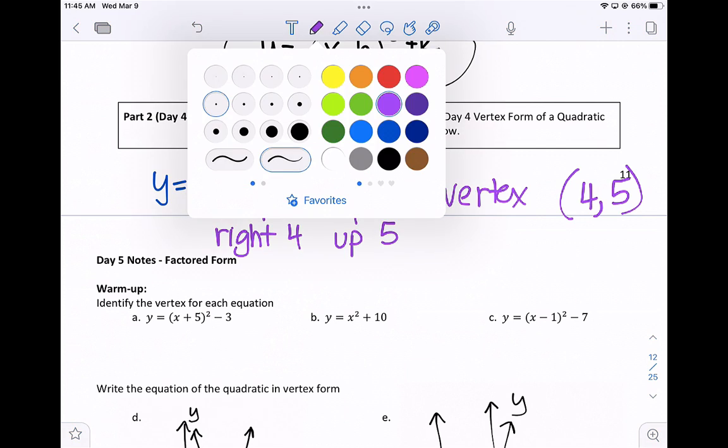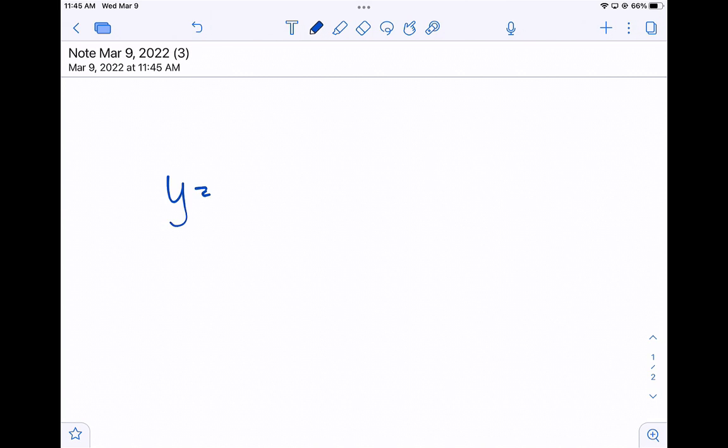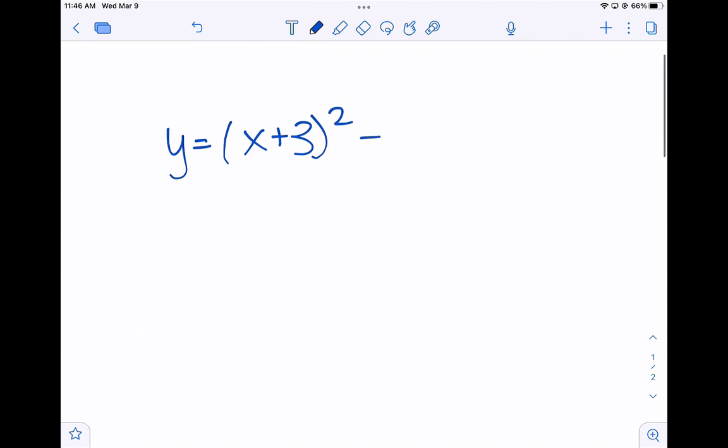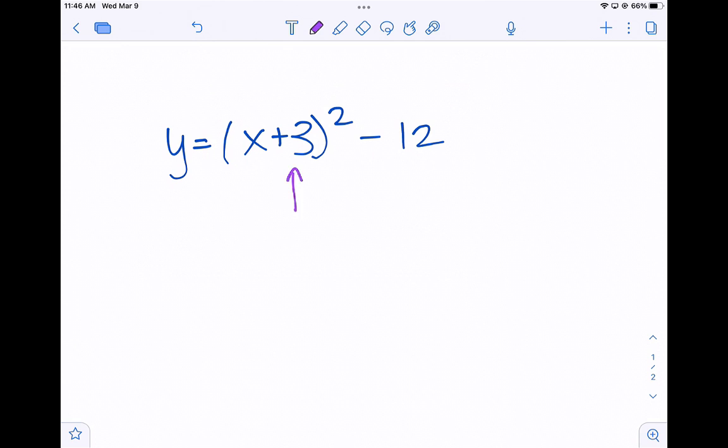Another example, and again, we'll just summarize in class. What if you had the graph, y equals x plus 3 squared minus 12. And again, playing around with the graphs on Desmos, if you forgot, you'll see that this shifts your graph left 3 and down 12. So the vertex will be negative 3, negative 12.